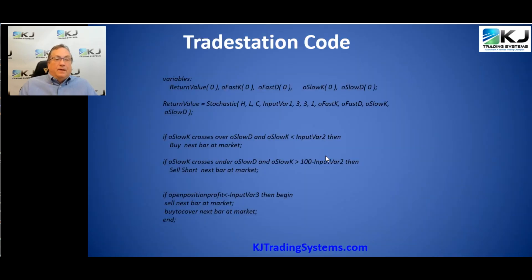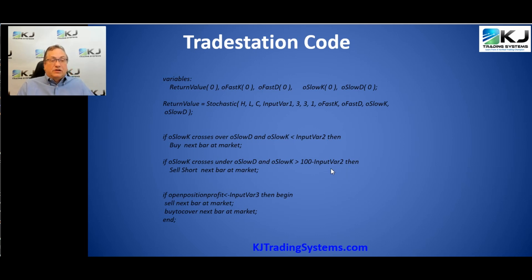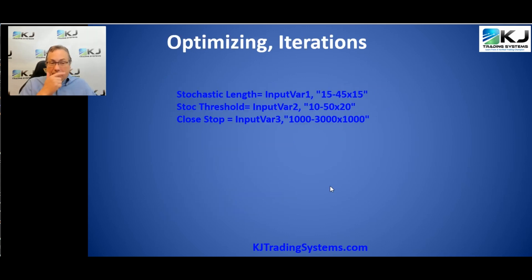Here's the TradeStation code. What it does is calculate the stochastic using a TradeStation function with several parameters. It returns a slow K and a slow D. If the slow K crosses over the slow D and the slow K is below a certain amount, you buy. If it crosses under and the slow K is greater than 100 minus that amount — since this stochastic oscillates from 0 to 100 — you sell short. Then at the close of every bar, if you go below a certain price in terms of how much money you've lost in the trade, you exit the next bar at the open. That's it for the code.